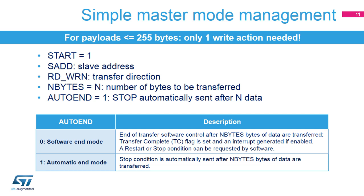If the auto-end bit is not set, the end of transfer is managed by software. After the programmed number of bytes is transferred, the transfer complete, or TC flag, is set, and an interrupt is generated if enabled. Then a repeated start or a stop condition can be requested by software. The data transfer can be managed by interrupts or by the DMA.